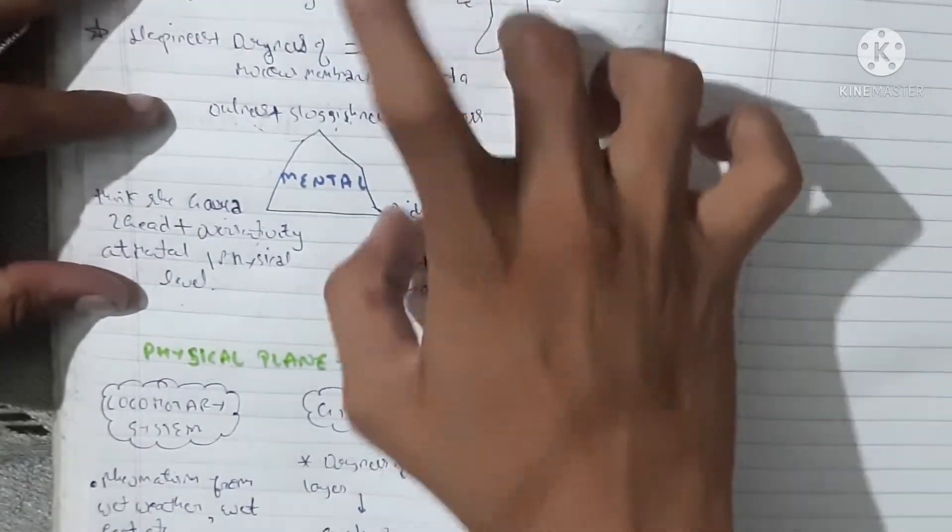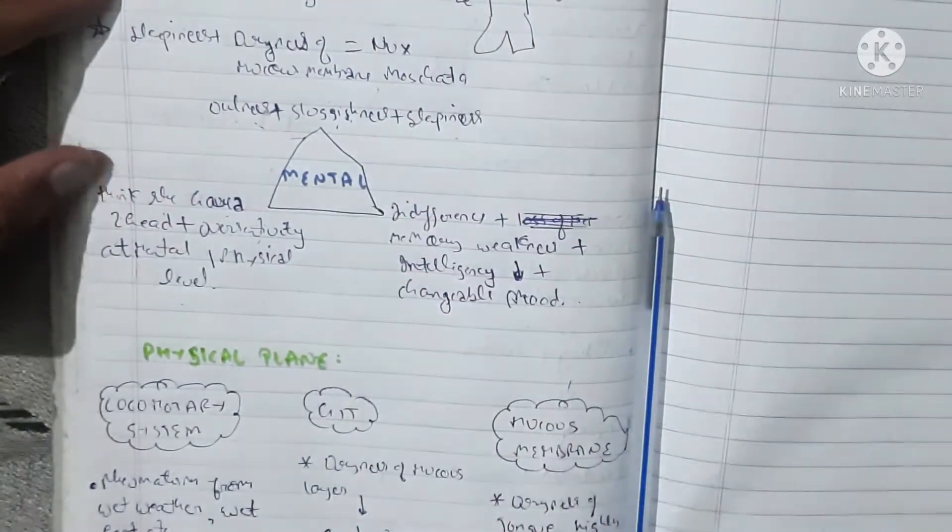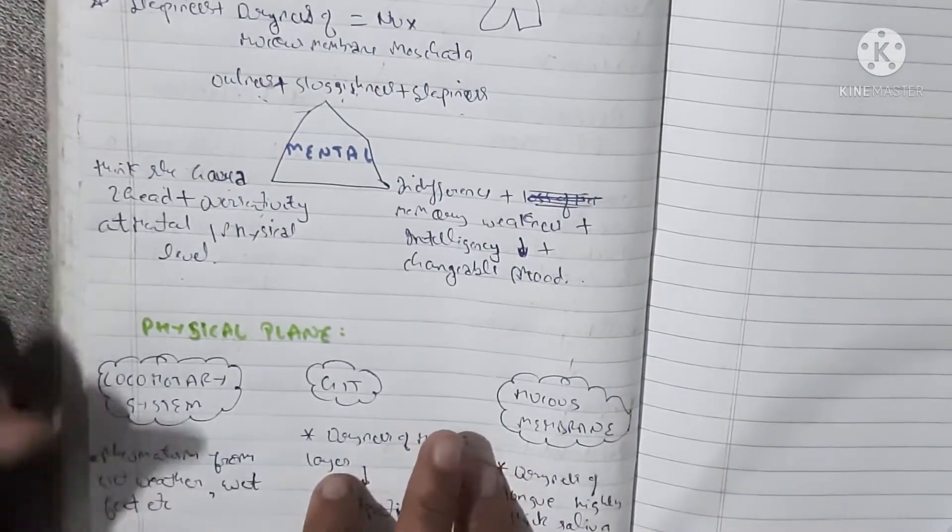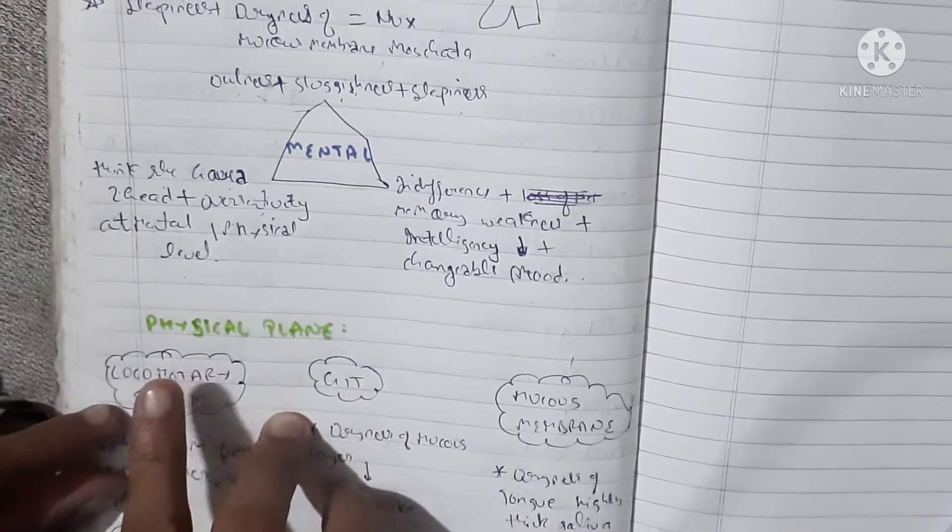If we see all the features on mental level, then we can select that. And if we actually talk about physical plane, then what can we see in physical plane?